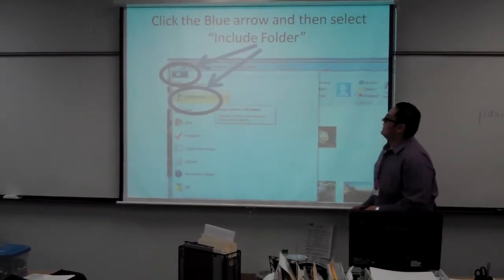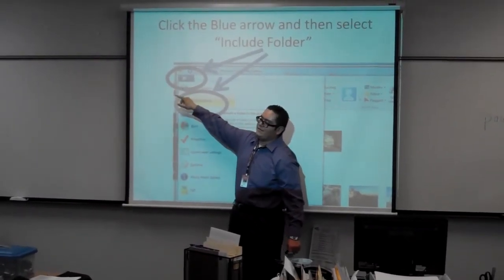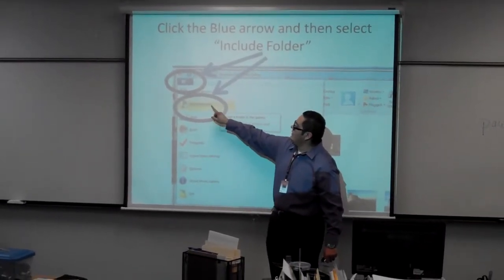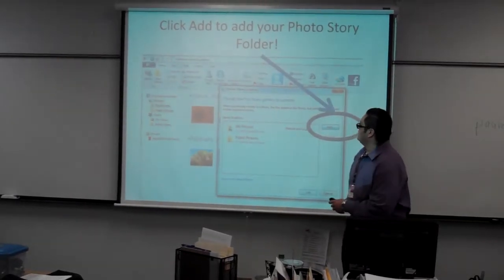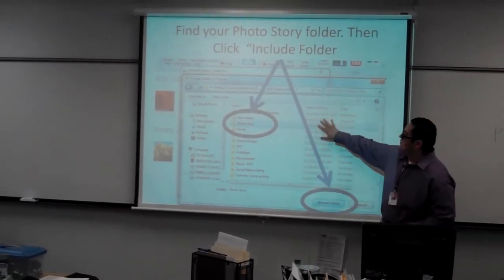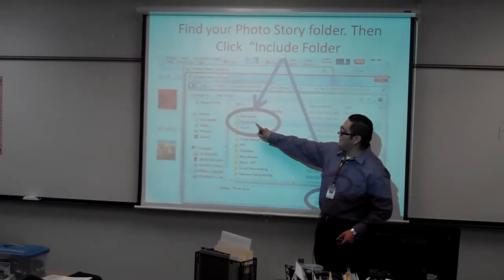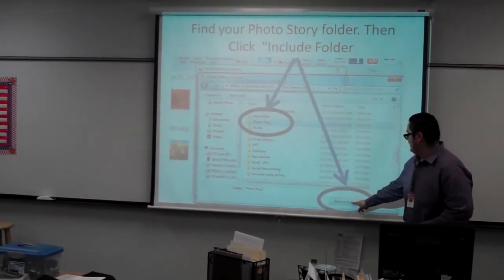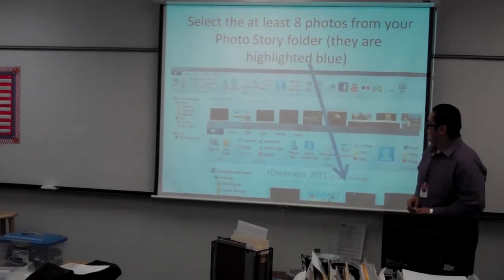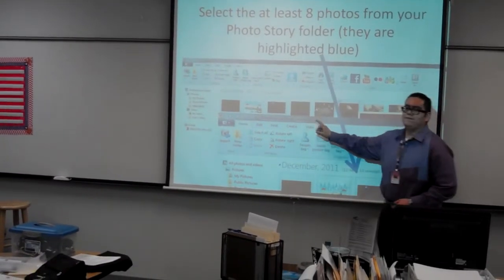Once you're there, you're going to click on this blue little icon — similar to the Microsoft Office button, that big yellow one, except this one is a little bit smaller. Then you're going to click on include folder. Once you click on include folder, click add. That will take you to your home drive — look through the folders until you find photo story. Double click on that and click include folder. A window will pop up, just click OK. That will add your photo story folder along with all the photos you downloaded from virtual classroom.